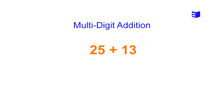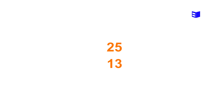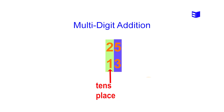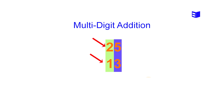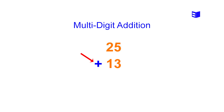Next, take the example of 25 added to 13 to understand how to perform addition. First, we write the numbers on top of each other: the ones in the same column, tens in the same column. In this example, the numbers 5 and 3 are in the ones column and the numbers 2 and 1 are in the tens column. Next we place a plus sign to the left of the number 13, representing the addition between 25 and 13, and we draw a line below the numbers.